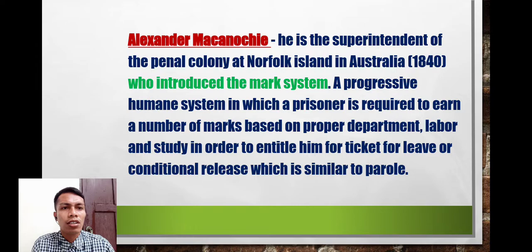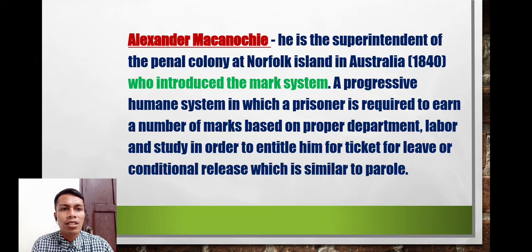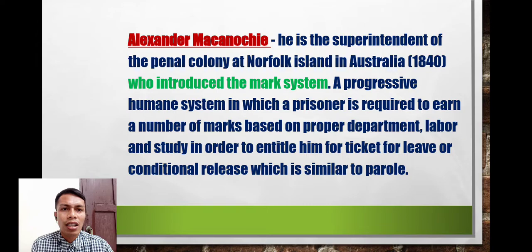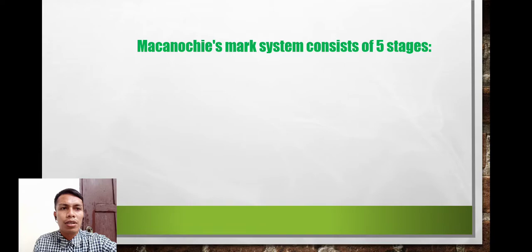Alexander Maconochie was the superintendent of a penal colony at Norfolk Island in Australia in 1840. He introduced the mark system — a progressive and humane system in which a prisoner is required to earn a number of marks based on proper deportment, labor, and study in order to be entitled to a ticket of leave or conditional release, similar to parole today.